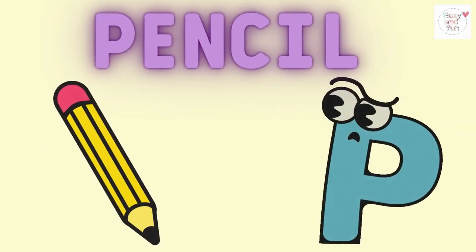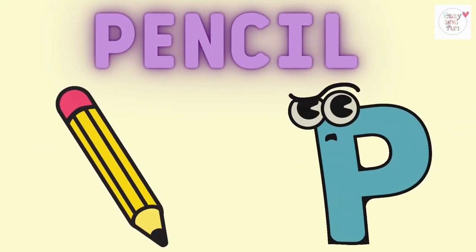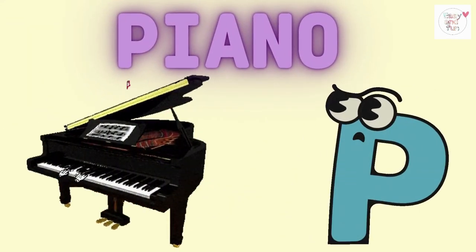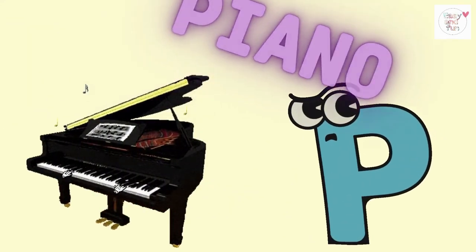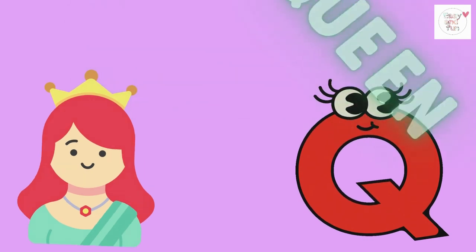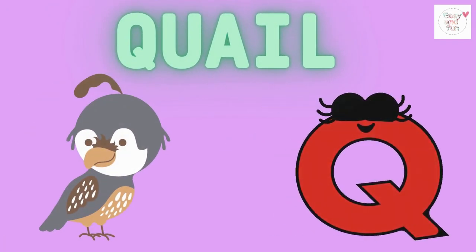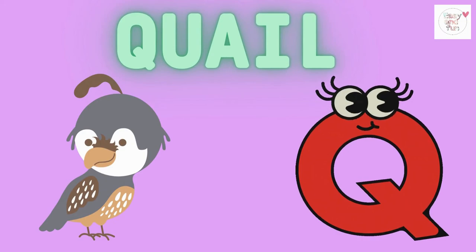P is for pencil, p-p-pencil. P is for piano, p-p-piano. Q is for queen, k-k-queen. Q is for quail, k-k-quail.